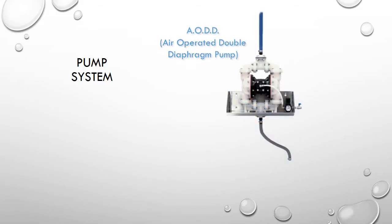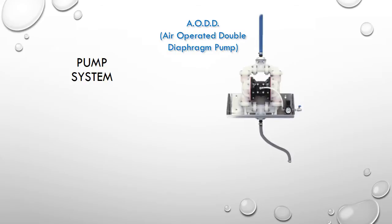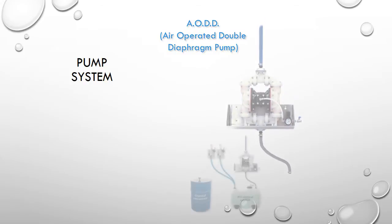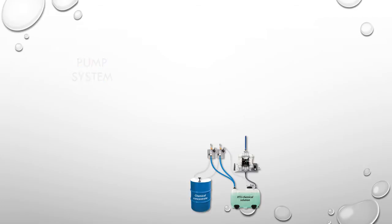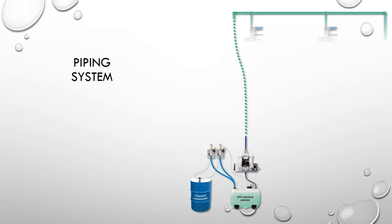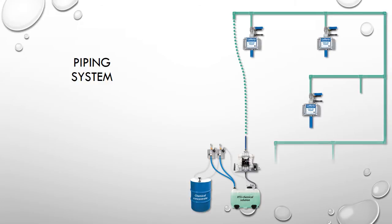A pump system — in this case an air-operated double diaphragm pump — provides the solution pressure that runs the system. The pump draws the chemical solution from the holding tank and sends it through a piping system to multiple pump-fed chemical applicators.